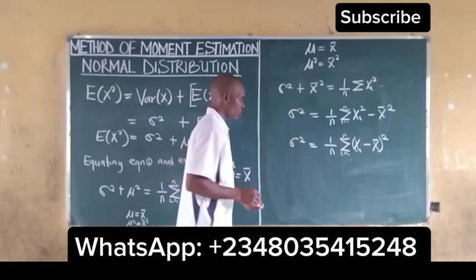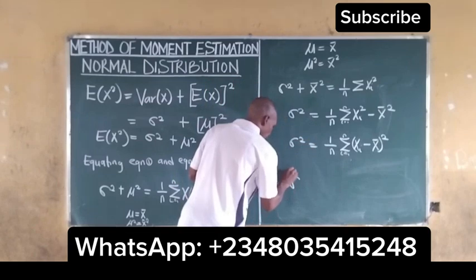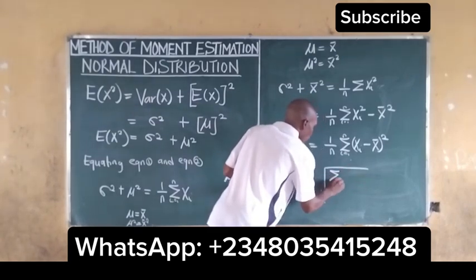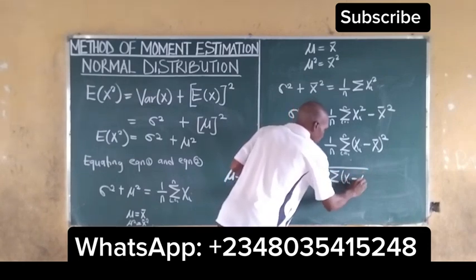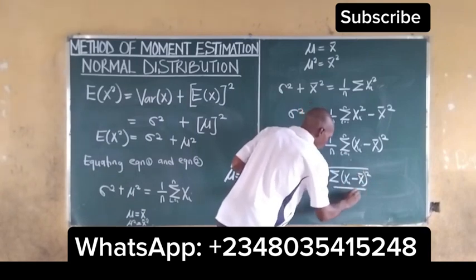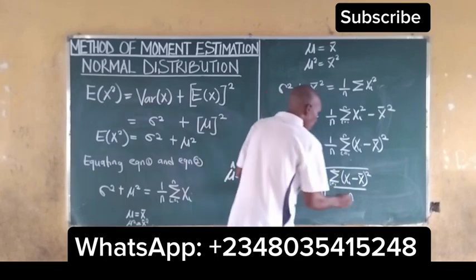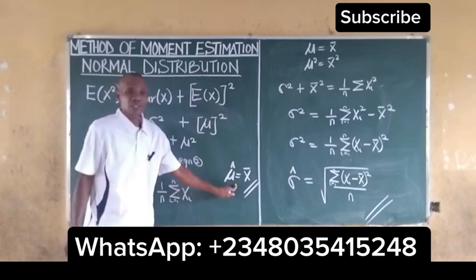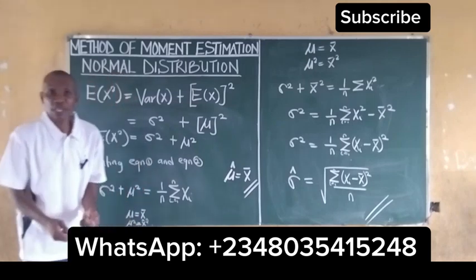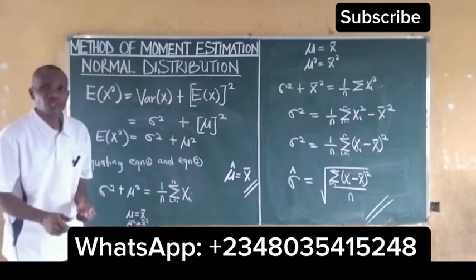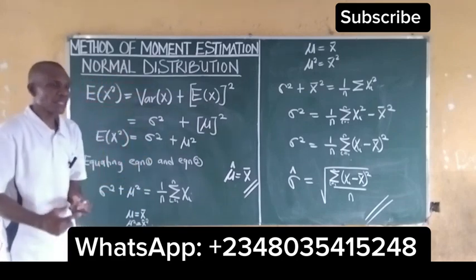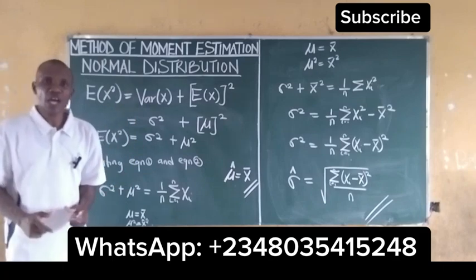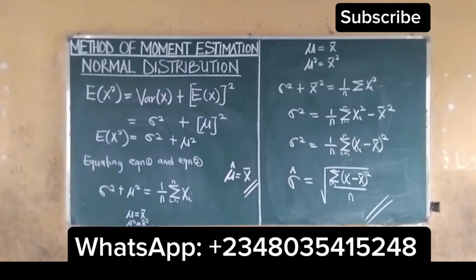So our estimate of sigma squared is equal to (1/n) summation of (x_i minus x̄) squared, for i running from 1 to n. This means our variance estimate comes from the second moment and our mean estimate from the first moment. This is how you obtain the method of moments estimation for the normal distribution when estimating both the mean and the variance. Thank you.